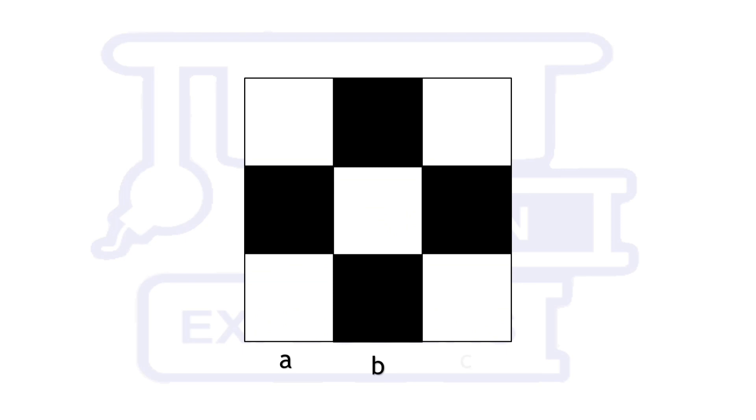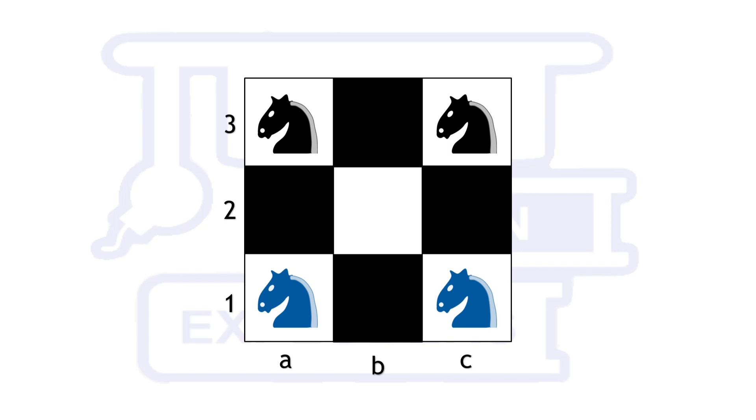But in our problem there is a 3x3 chessboard only. Choose any one of the knights and observe its moves, say c1.